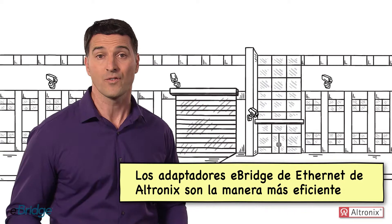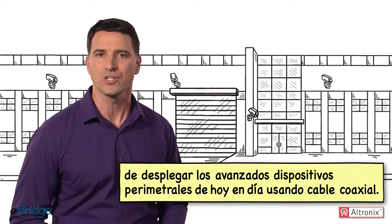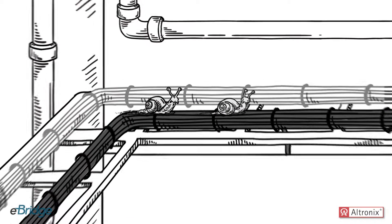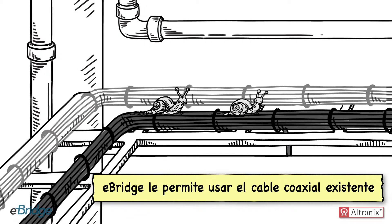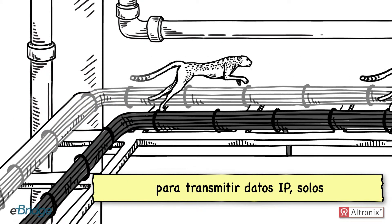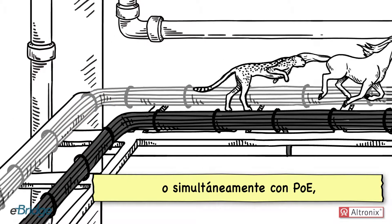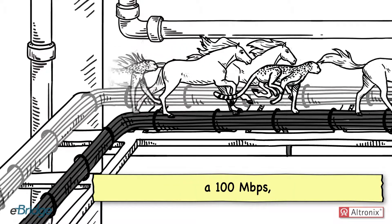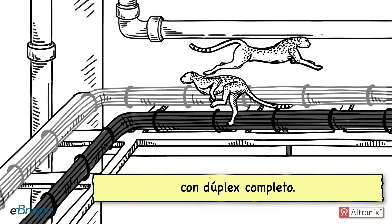eBridge Ethernet adapters from Ultronix are the most efficient way to deploy today's advanced edge devices utilizing coax. eBridge lets you use existing coax cable to transmit IP data by itself or simultaneously along with PoE, PoE Plus, even High PoE at data rates up to 100 megabits per second, full duplex.